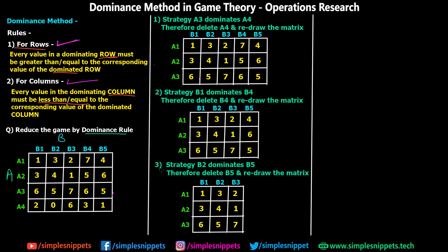In step number three, strategy B2 dominates B5. All values in B2 — that is 3, 4, and 5 — are less than or equal to B5: 3 < 4, 4 < 6, and 5 equals 5. So B2 dominates B5 according to the column rule, and we can completely exclude B5. After redrawing, we now have a 3×3 matrix.